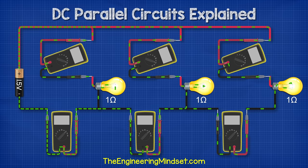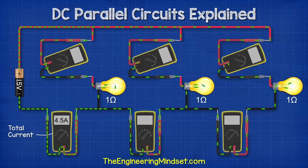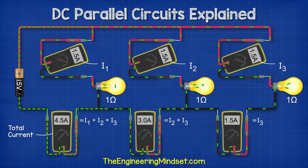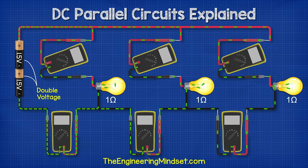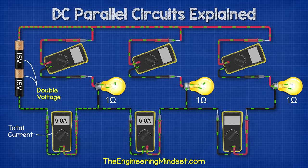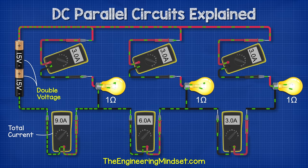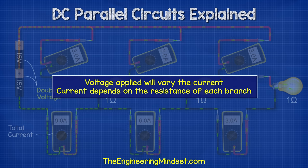Lamp one sees a current of 0.75 amps and will be less bright. Lamp two continues to read 1.5 amps, and the meter between lamp one and two continues to see 1.5 amps. Therefore, we can see that the current flowing in a branch depends on the resistance of that branch, and the total current in the circuit is the sum of the currents in each branch. If we add a third one ohm lamp and change lamp one back to a one ohm resistive lamp, so that's three one ohm lamps in parallel, the total current in the circuit is now 4.5 amps. Doubling the voltage from 1.5 volts to three volts doubles the current also — the total current increases to nine amps, and each lamp now experiences three amps of current.